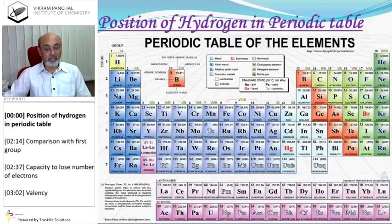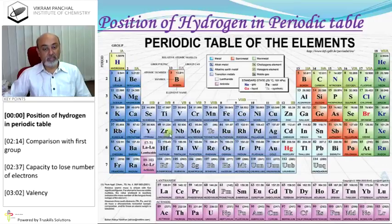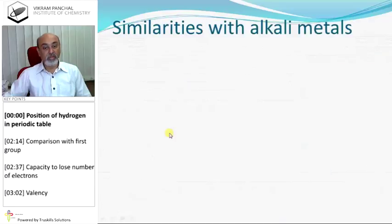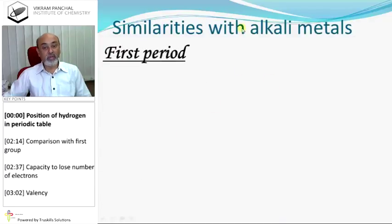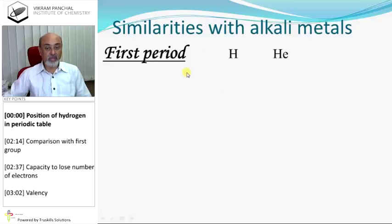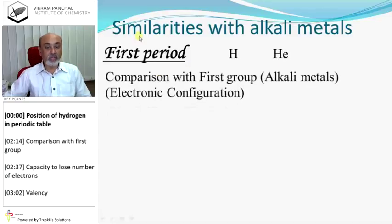Hydrogen is number one and it is placed with the first group — lithium, sodium, potassium, rubidium, cesium, francium — because hydrogen is similar to alkali metals. That is why hydrogen is grouped with alkali metals.